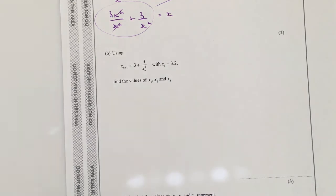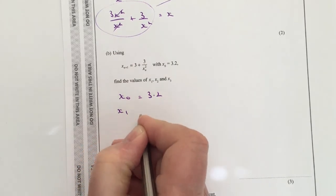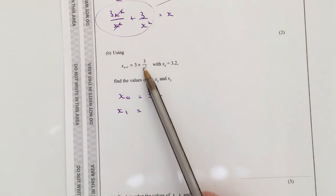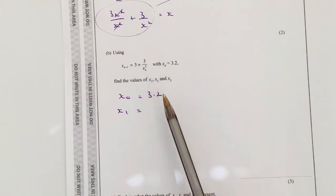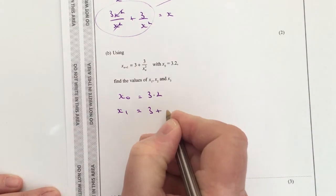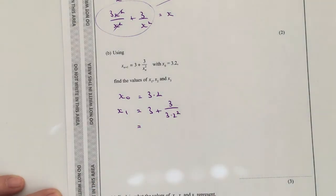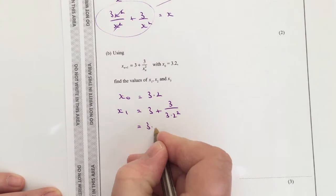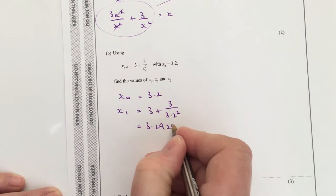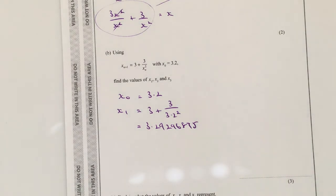So basically what we're saying is x0 equals 3.2. x1 is where we take this value of 3.2 and we put it into the iteration formula. So in this case, it's 3.2 squared. So I can write that as 3 plus 3 over 3.2 squared, and when I calculate that, I'm going to get 3.29296875, and that's my first value of x1.